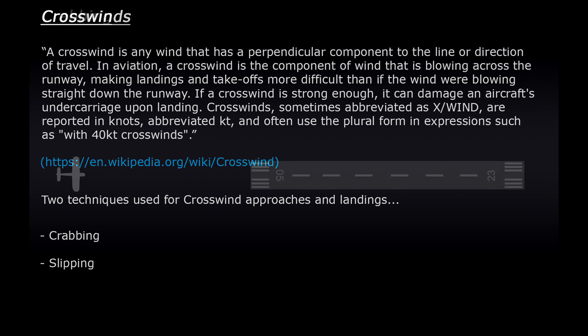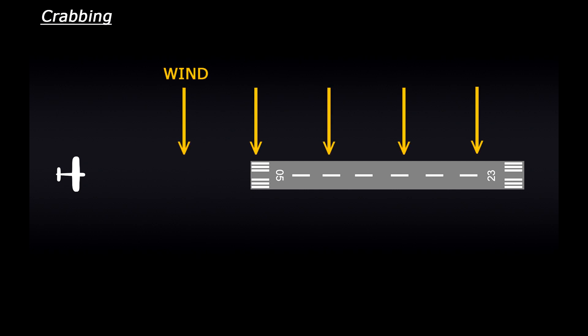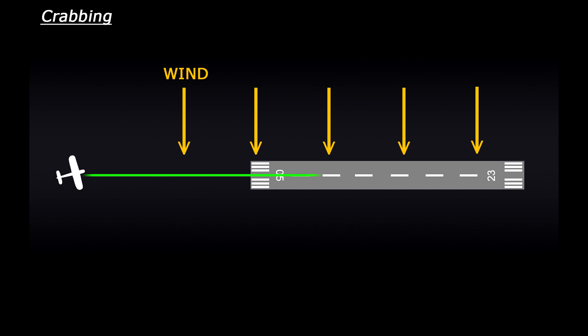Let's look at crabbing first. If we imagine that we're on approach to the runway and we have a crosswind blowing, the plane is going to drift sideways away from the runway. Crabbing involves turning the plane into the wind so that it drifts sideways in line with the runway. Like a crab, the plane will be moving sideways towards the runway, hence the name crabbing.